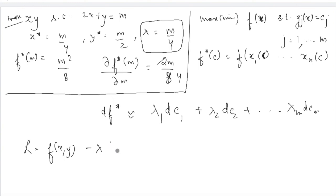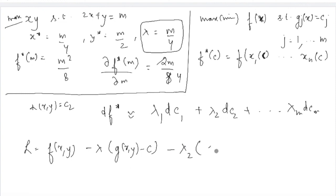For instance, if you write the Lagrangian as f(x,y) − λ·(g(x,y) − c) and you have a second constraint h(x,y) = c₂, you add another Lagrange multiplier for it. In such cases, the change in the objective function is roughly equal to the sum of each Lagrange multiplier multiplied by the respective change in its constraint constant: λ₁·dc₁ + λ₂·dc₂, and so on up to m constraints.